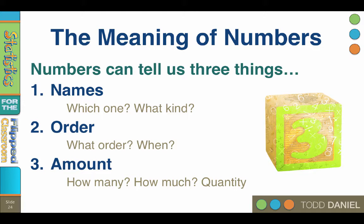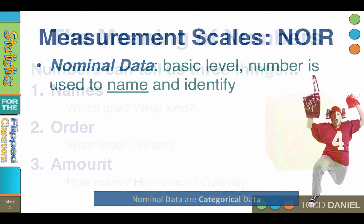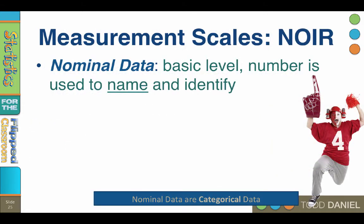Let's take a look at these descriptions of numbers in a little more detail. We are talking about measurement scales, or levels of measurement. The first level of measurement is nominal data. Nominal data are at a basic level — the number is used to name and identify. In fact, the word nominal means name.